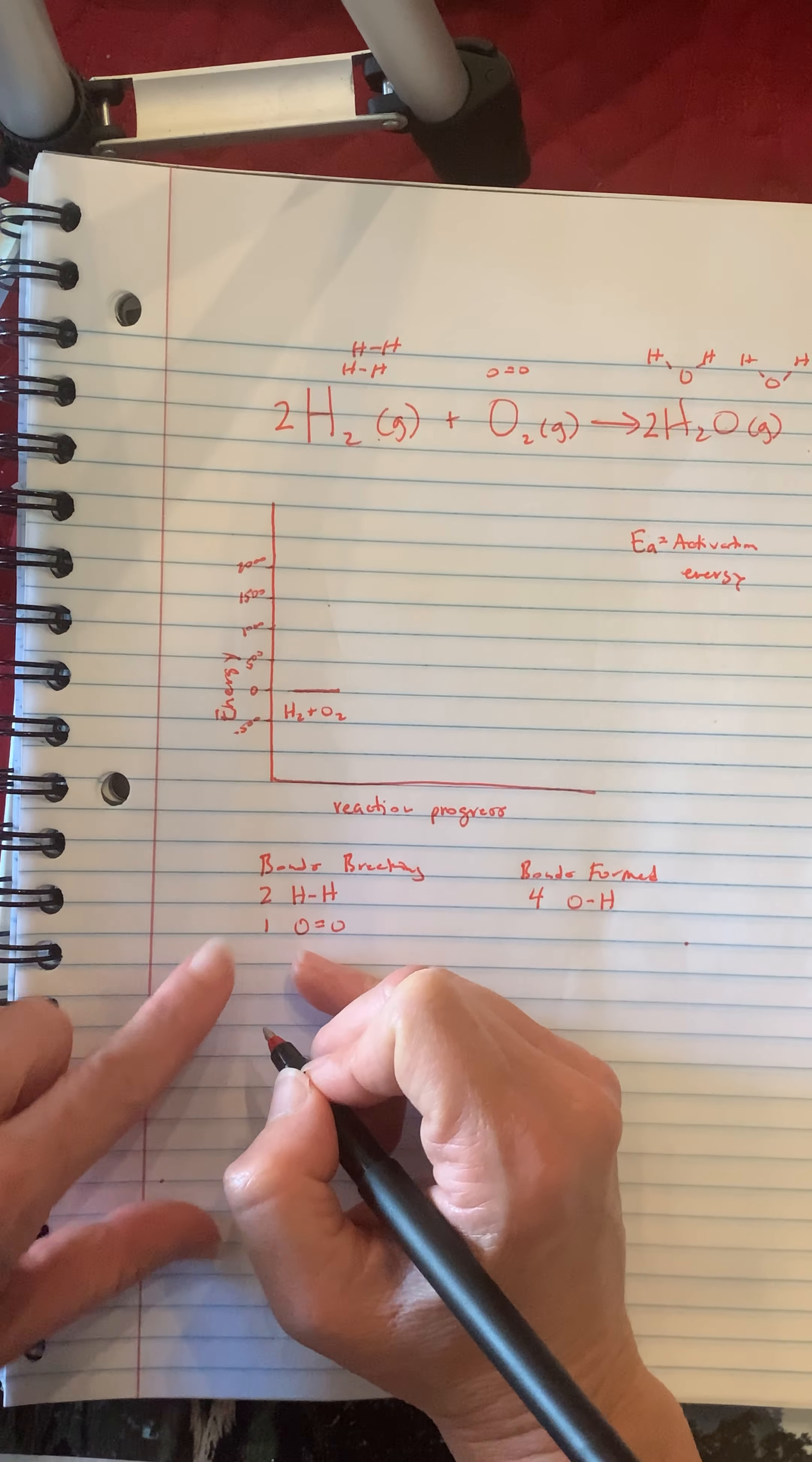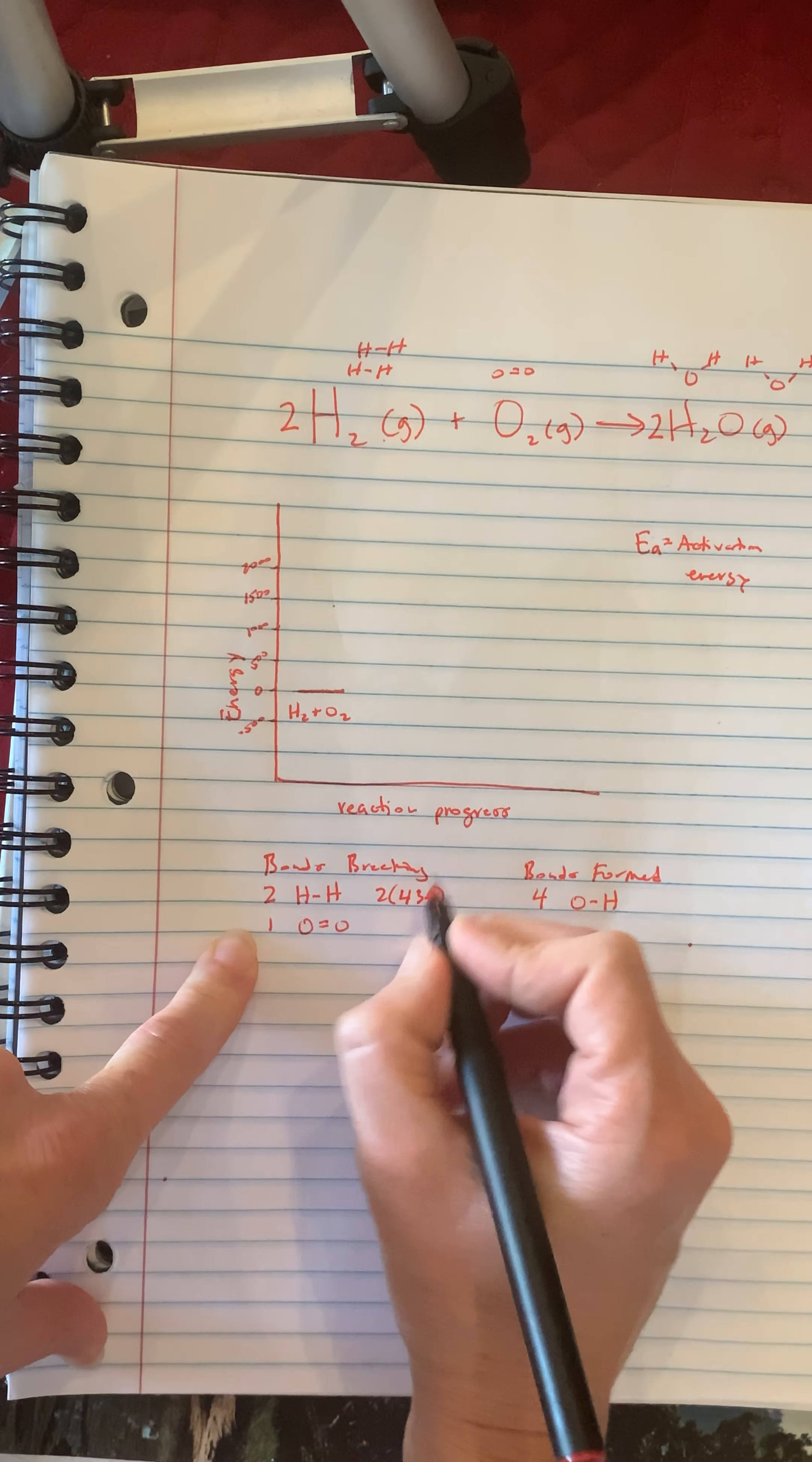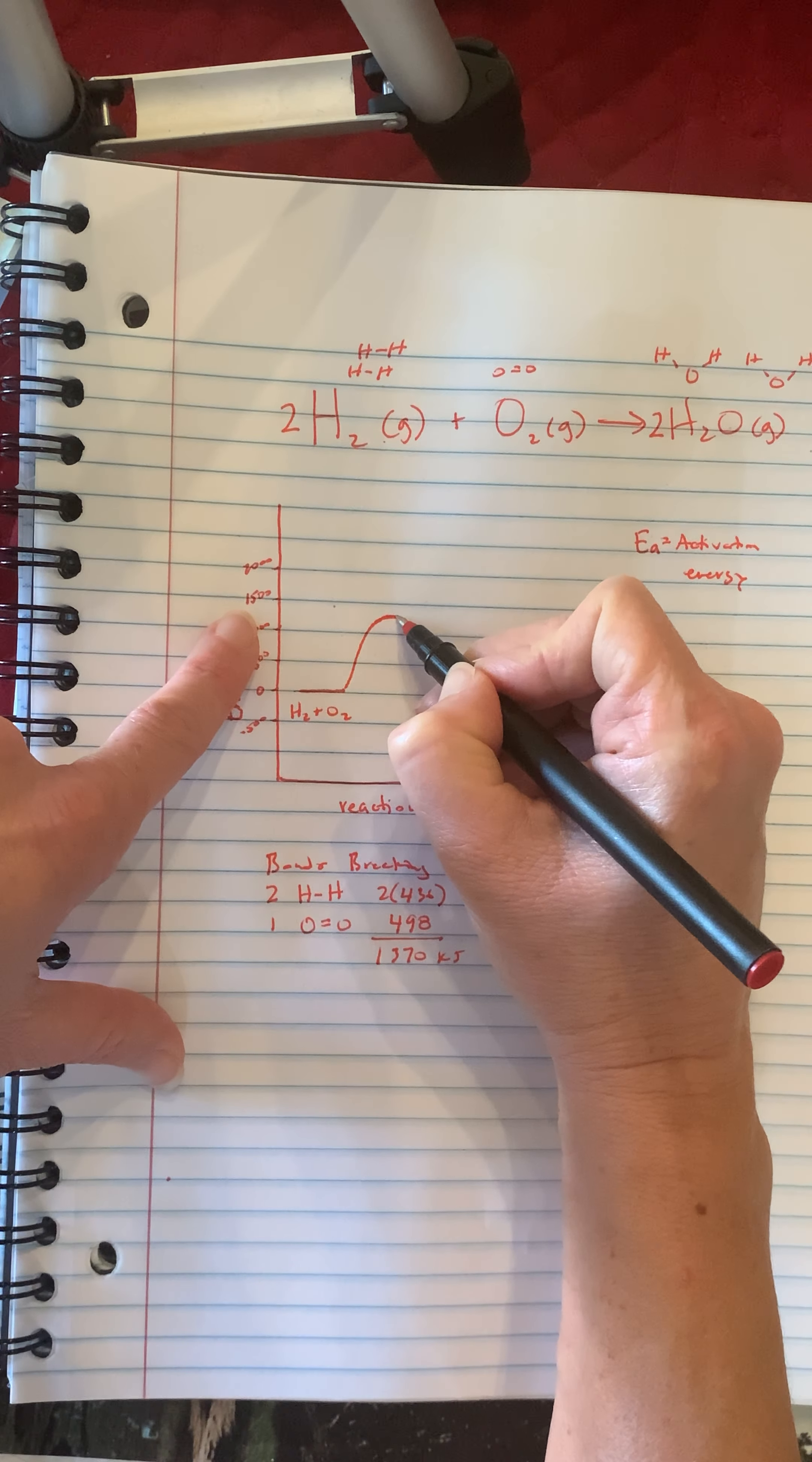And how much do we have to put in? Well we can look up the bond energy of these and each hydrogen to hydrogen is about 436 kilojoules to break apart. There are two of them so we need twice that amount. The oxygen to oxygen double bond is about 498 kilojoules to break apart. So total we have to put in 1370 kilojoules. So this is going to go up almost to this 1500 here. Okay, we have to put in that much energy.